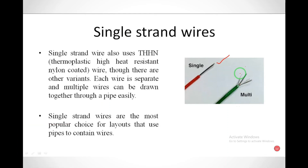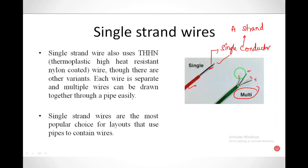A single aluminum conductor is taken here — this is a single conductor. We have insulation around that single conductor, so this is called a single strand. If we have multiple strands, that conductor is called multi-strand. Here you can see one, two, three, four — there are four strands, that's why it is called a multi-strand conductor.